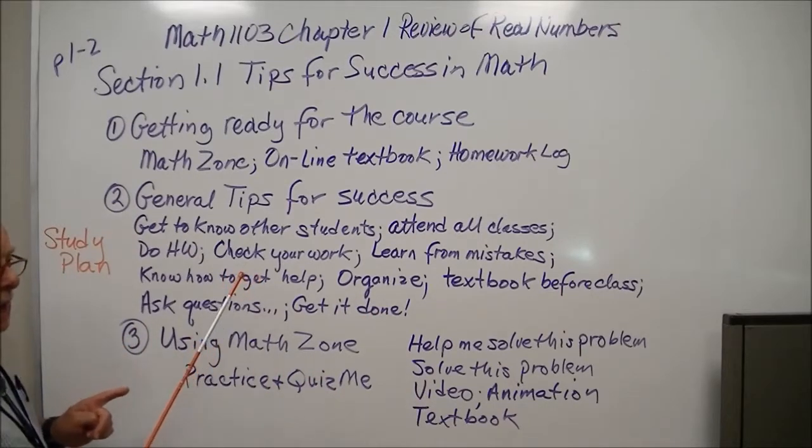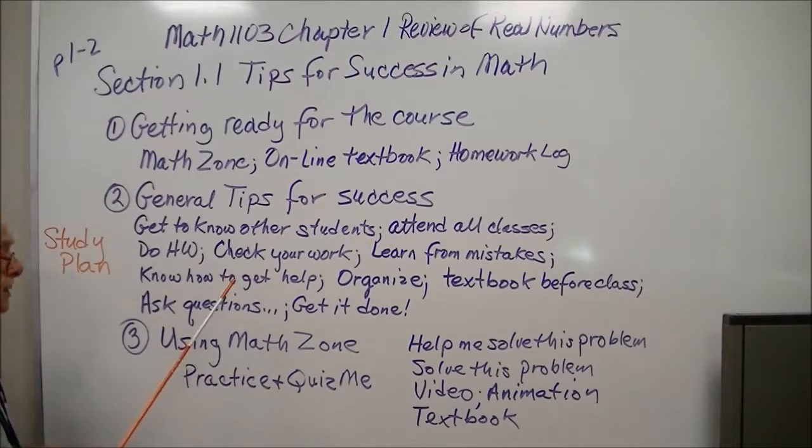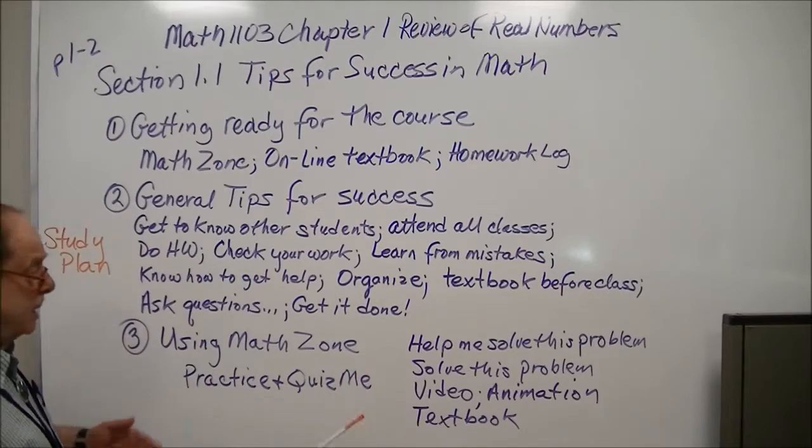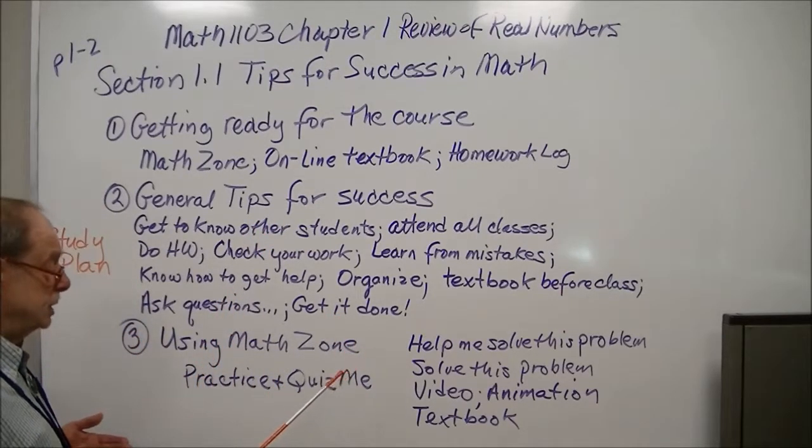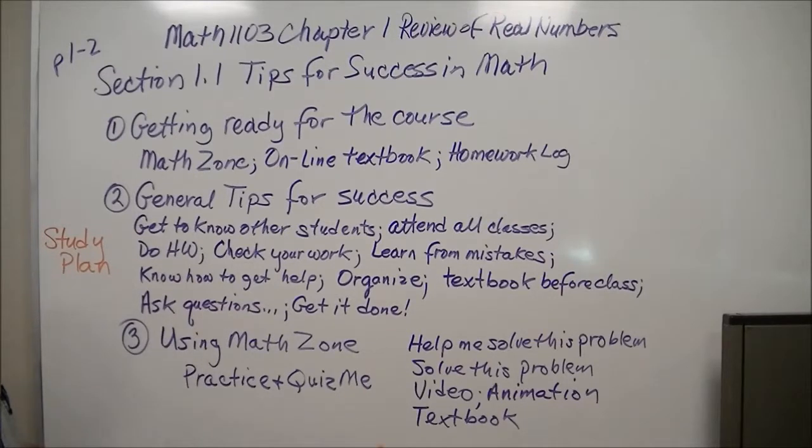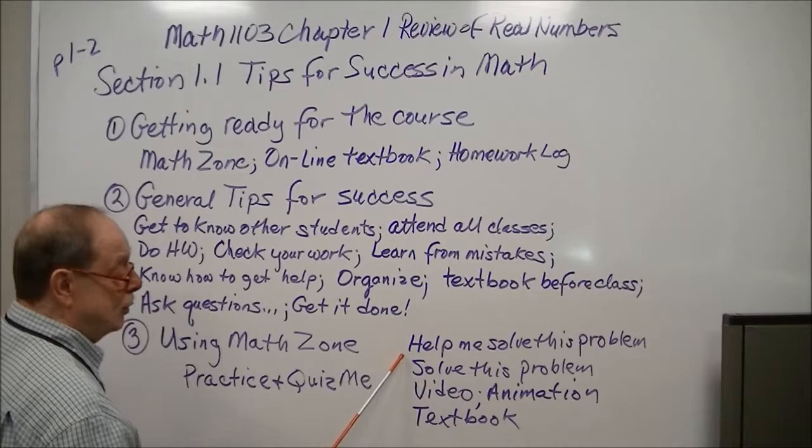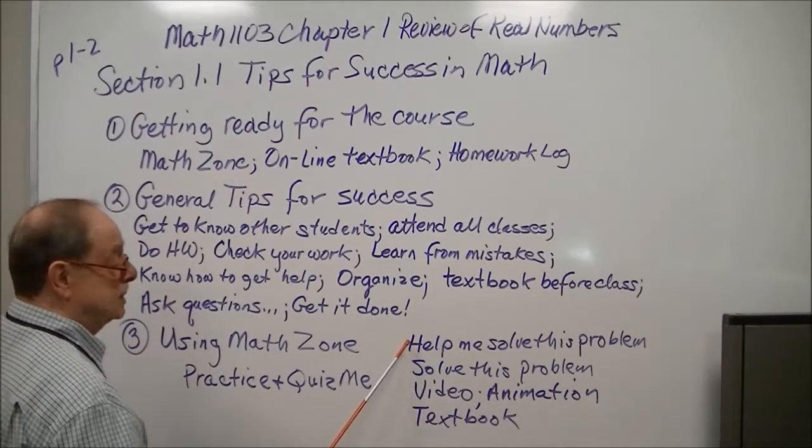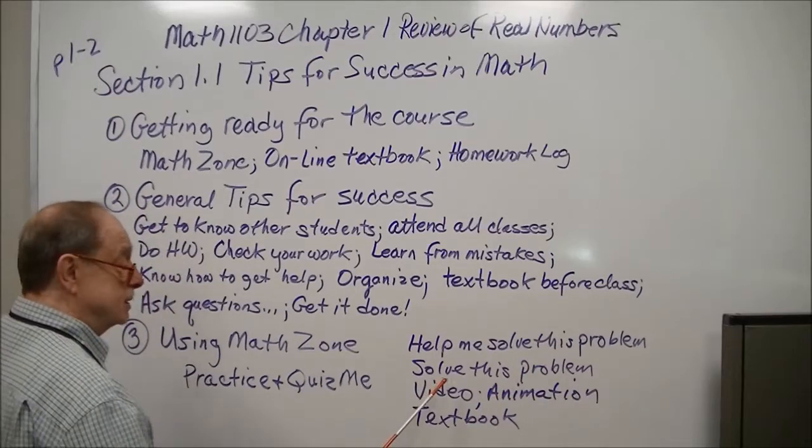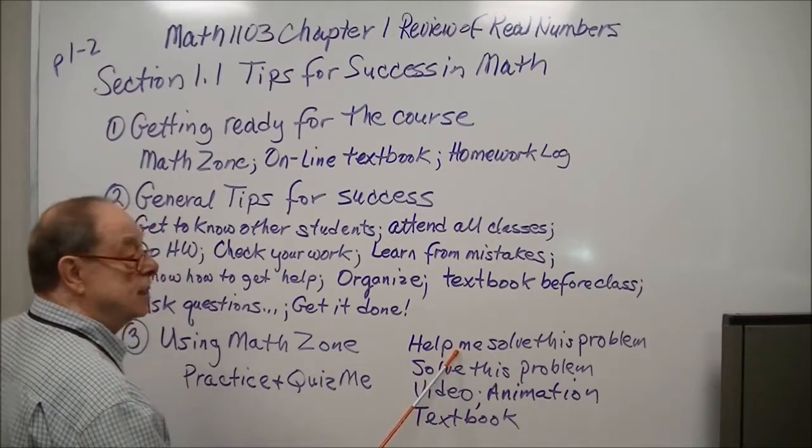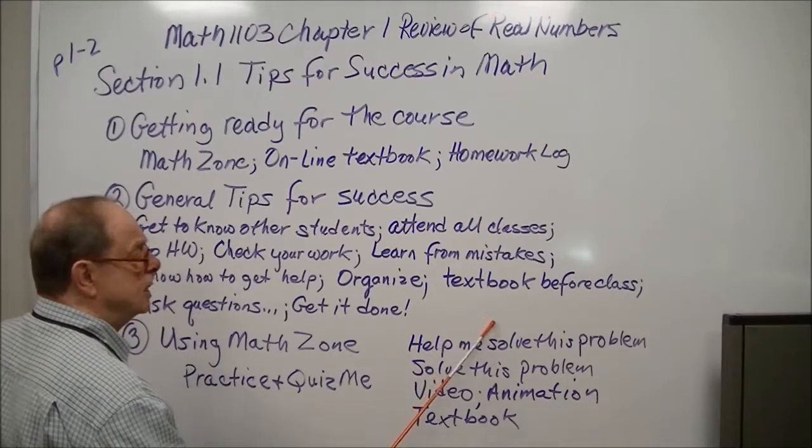You look back at the answer and say, oh, it's supposed to be a plus instead of a minus, or I put a dot instead of a comma. Something like that. You get a second chance to correct your answer. Check it again. It's still wrong. Then you have one more chance to change it. The third time, it will give you the correct answer. But you still don't know how to do it.